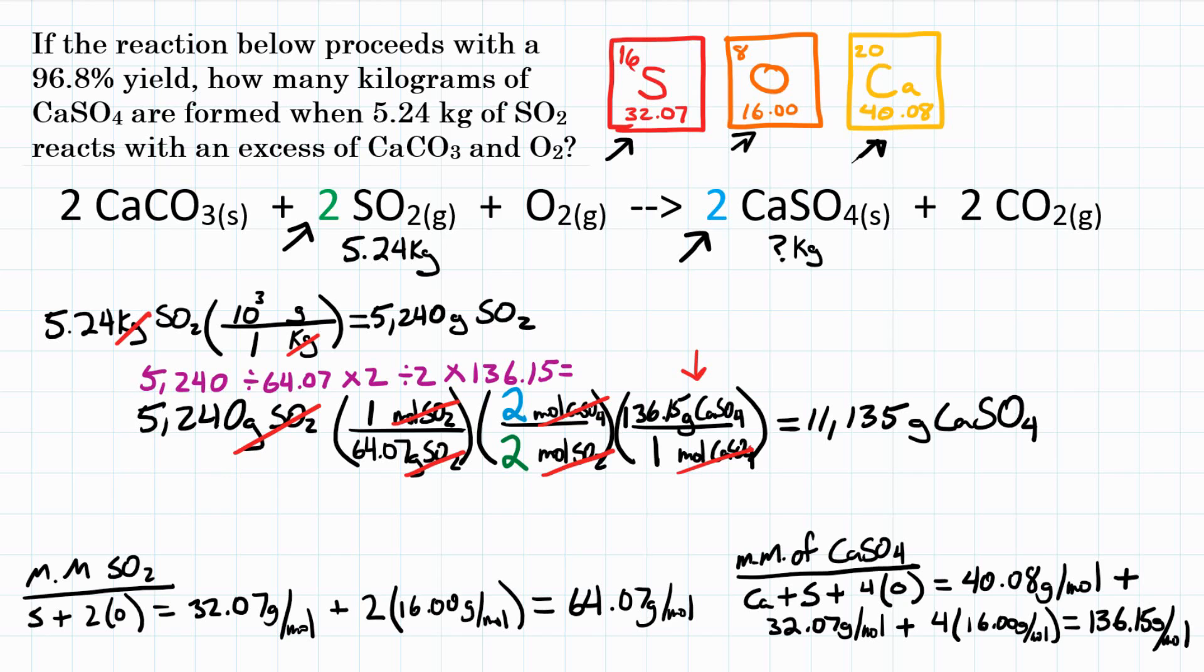But the question said the reaction proceeds with a 96.8% yield. So let's multiply our 11,135 grams times 96.8% as a decimal. So times 0.968. And that gives us about 10,779.